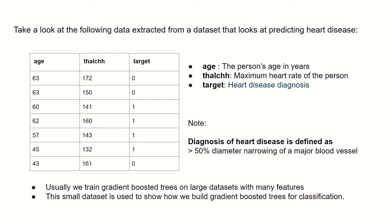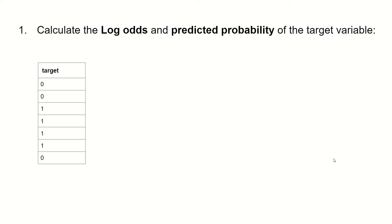Since this is quite a small dataset, the resulting algorithm may not be entirely accurate. Let's now go through, step by step, how to build gradient-boosted trees for classification on this dataset. First, we calculate the log odds and predicted probability of the target variable.